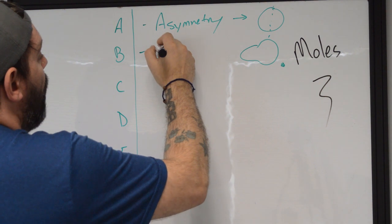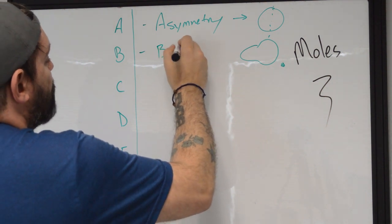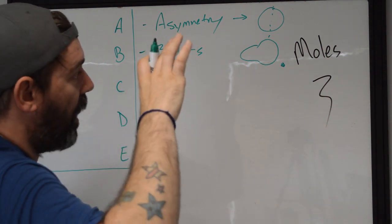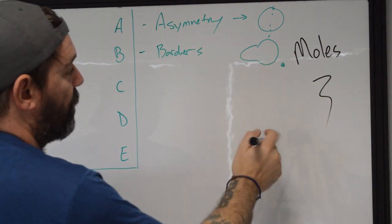B is going to be borders. So this is going to be the edges around any of the actual moles that we're going to see.